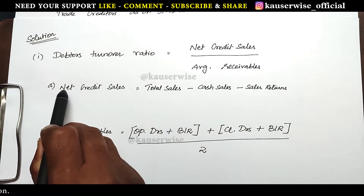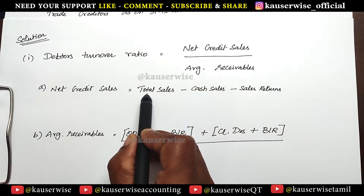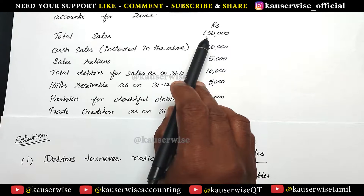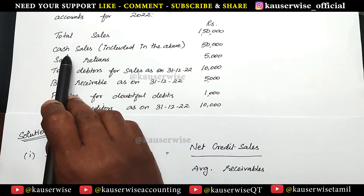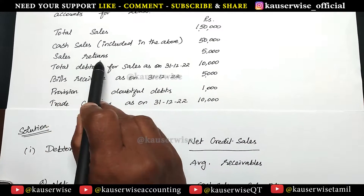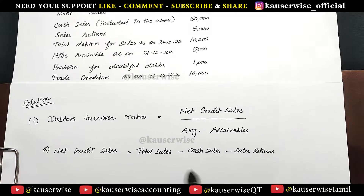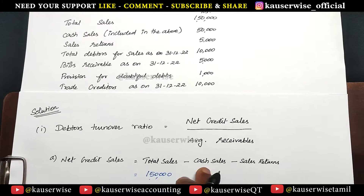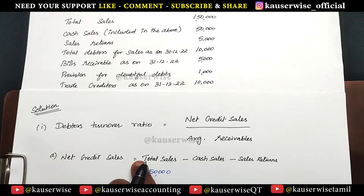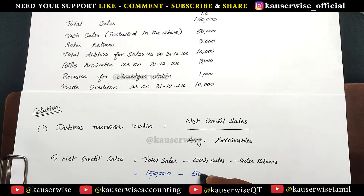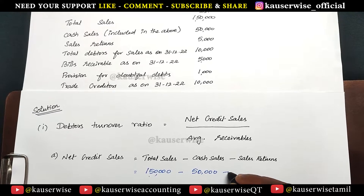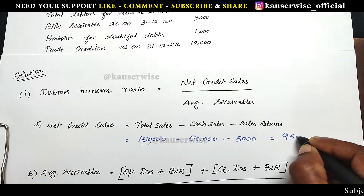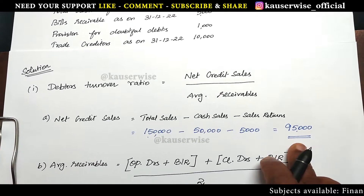Now first we need to calculate net credit sales. For that, see the total sales, cash sales and sales return from the problem. Total sales: 1,50,000. Cash sales: 50,000 — already included in total sales, so we need to subtract it. Sales return: 5,000 — subtract that too. You will be getting 95,000. So this is the net credit sales.